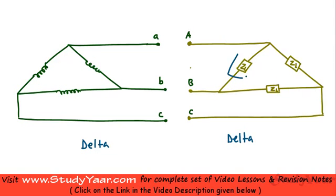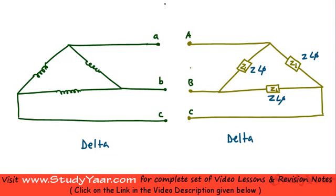I am assuming that I have balanced loads, so each impedance is Z angle phi. These are my transmission lines, and my load is connected by simply joining this to my transmission lines.